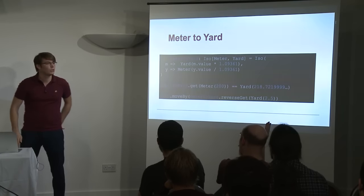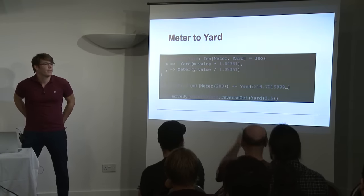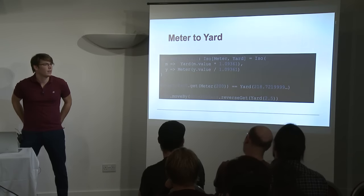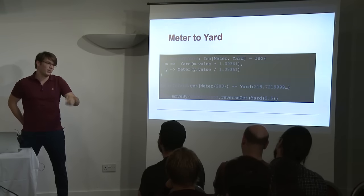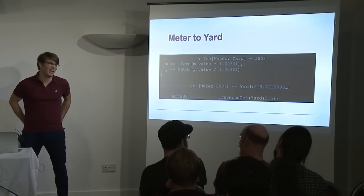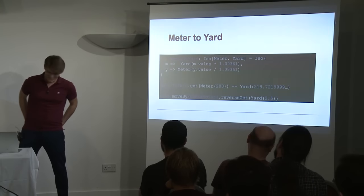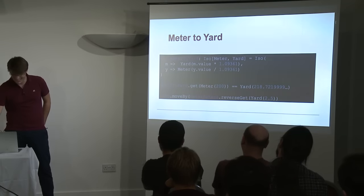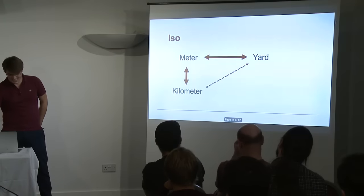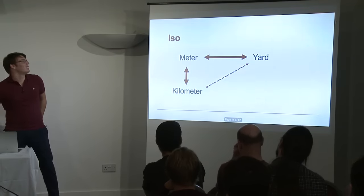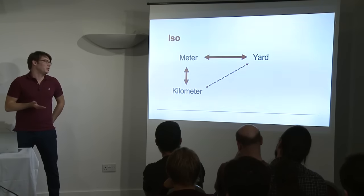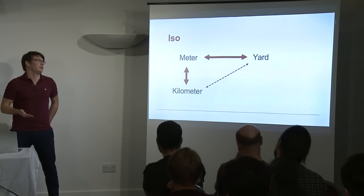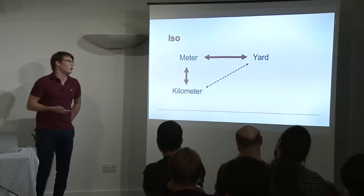An audience member asks about the semantics of doubles for this conversion. That's a good question — I will come back to it very shortly. Where ISO really shines is when we start to introduce more metrics and more units. We saw it was relatively easy to create an ISO between Meter and Yard. Now if we want an ISO between Meter and Kilometer, it's even simpler — you just multiply or divide by one thousand.